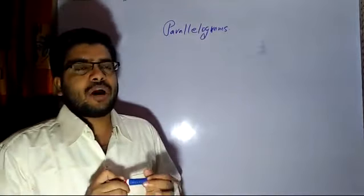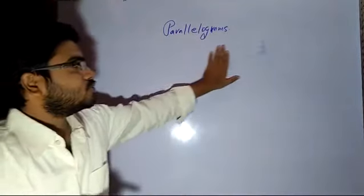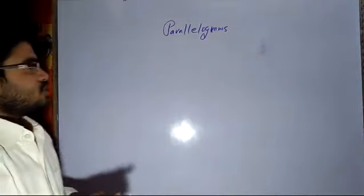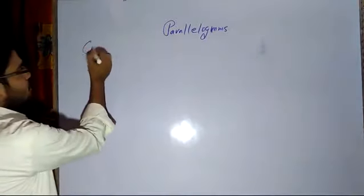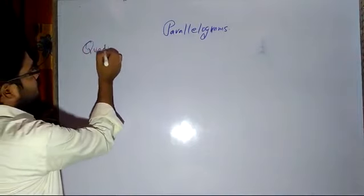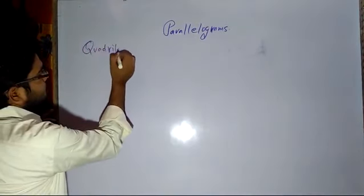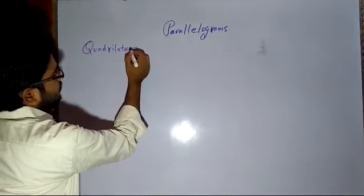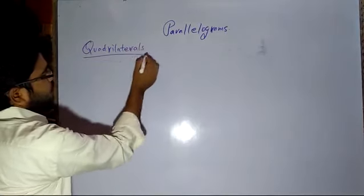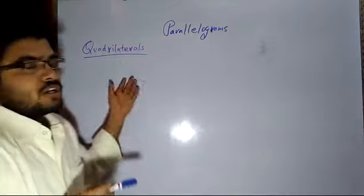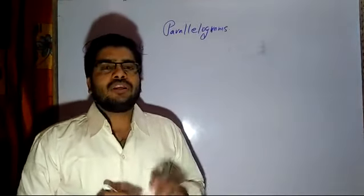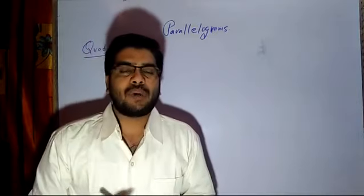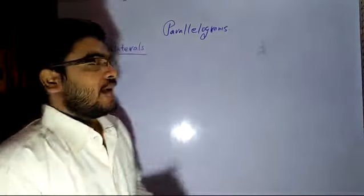As part of an introduction, I would like to give you some information related to parallelograms. First of all, you should know what is a quadrilateral. A quadrilateral is a plane figure or a rectilinear figure enclosed by 4 line segments.